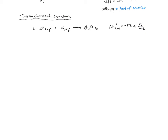So for every one mole of reaction that takes place, two moles of hydrogen and one mole of oxygen are reacted and produce two moles of water. Another way of looking at this: there are negative 571.6 kilojoules of energy released for every two moles of H2 reacted, or negative 571.6 kilojoules released for every one mole of O2 reacted, or negative 571.6 kilojoules released for every two moles of H2O produced.